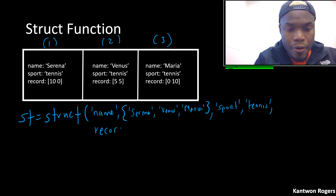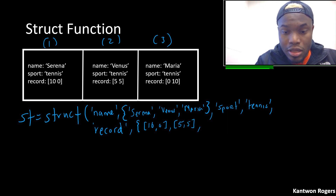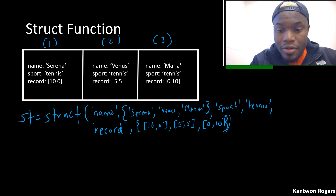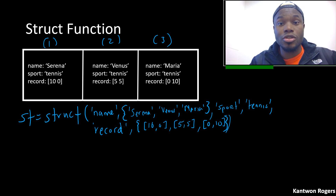Lastly for the 'record' field, I'll use a cell array where the first spot is the vector [10, 0] because Serena is the best, the second is [5, 5] for Venus, and the last is [0, 10] for Maria Sharapova. Each corresponding vector gets placed into each corresponding spot. That's how you use the struct function to create structure arrays.